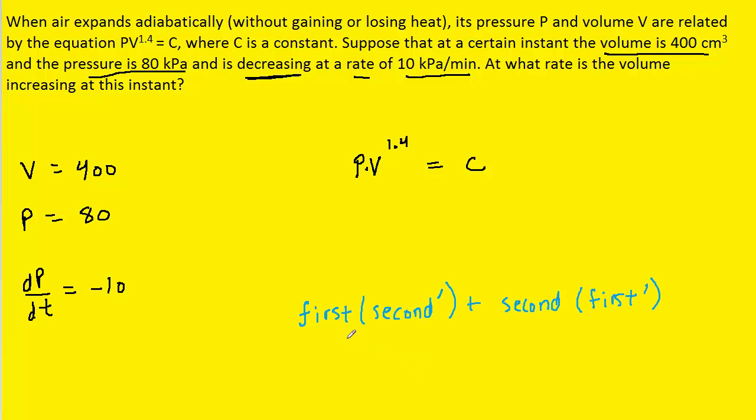As a reminder, the product rule tells us to multiply the first function times the derivative of the second, and then add that to the second function multiplied by the derivative of the first.